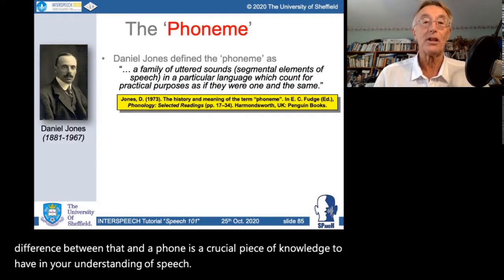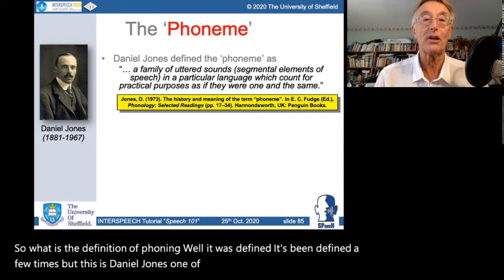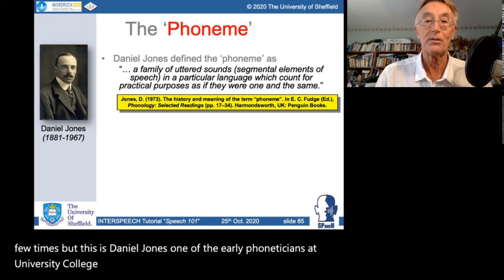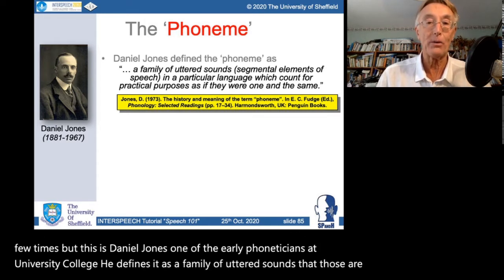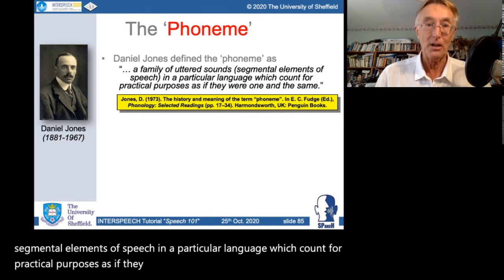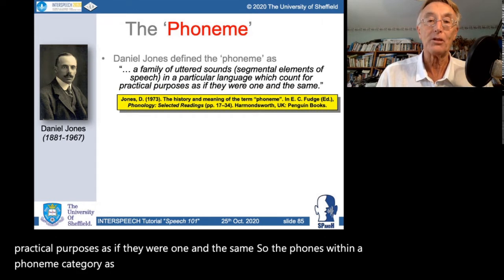So what is the definition of the phoneme? It was defined by Daniel Jones, one of the early phoneticians at University College. He defines it as 'a family of uttered sounds — those segmental elements of speech — in a particular language which count for practical purposes as if they were one and the same.' The phones within a phoneme category are interchangeable, which is an interesting idea.